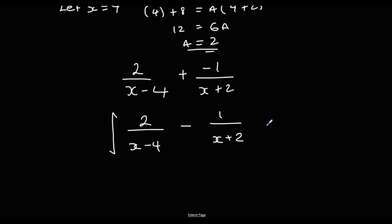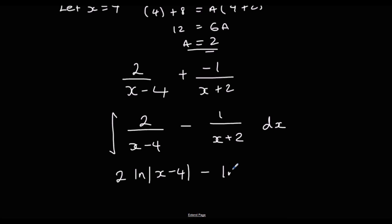Now we integrate: 2 ln(x minus 4), dividing by the bracket differentiated which is 1, minus ln(x plus 2), dividing by the bracket differentiated which is 1 again, plus c.